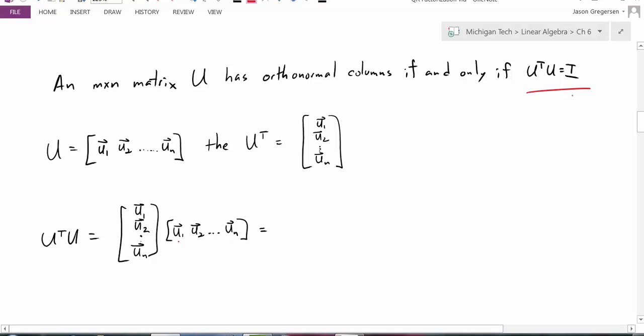If I have U that has orthonormal columns, here I've expressed it as its columns U1, U2, all the way to UN, those are the orthonormal columns. Now if I look at U transpose, the columns are now becoming the rows of U transpose, so that's U1, U2, down to UN. And if I look at that product U transpose times U, I've got it written out here.